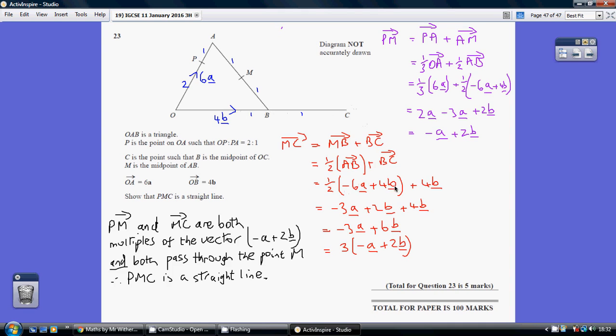Multiply out the brackets, gather-like terms and we get MC being minus 3A plus 6B. Now, if we factorise that, we get that being three lots of minus A plus 2B. So, they're both multipliers of the same vector. That is one lot. That is three lots. So, that proves that they are parallel and you then just say, as they both pass through the point M, PMC is a straight line.